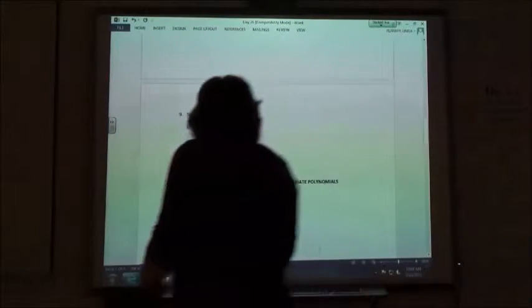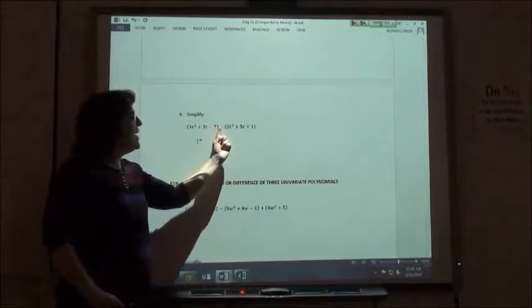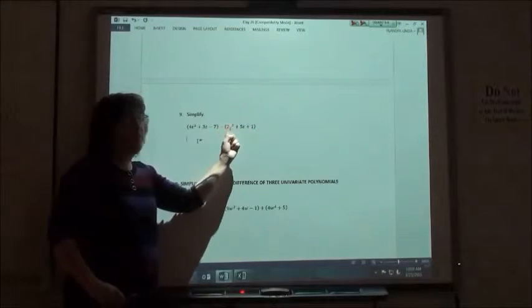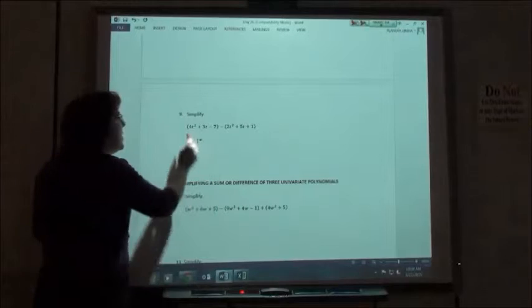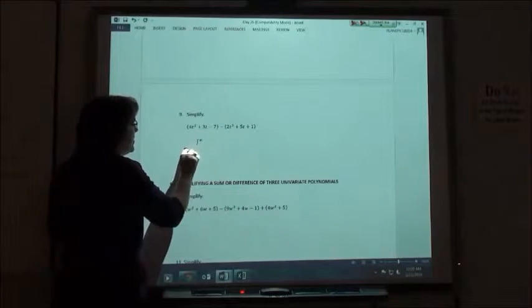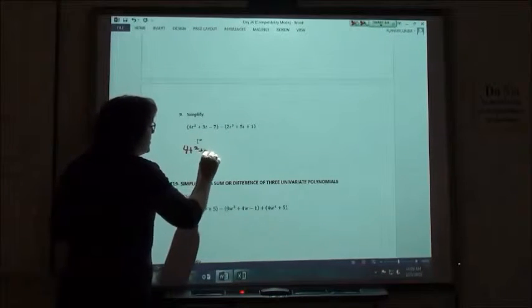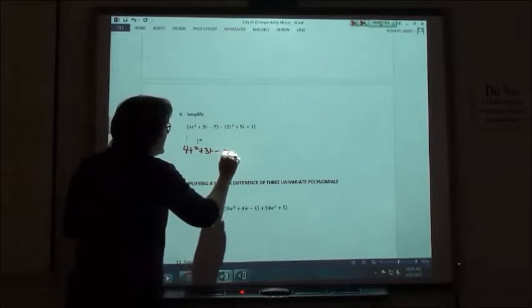So when we subtract, we have to remember that when this negative is in front of the parentheses, we have to distribute that negative out. The first part is going to stay the same. It's just 4t squared plus 3t minus 7.